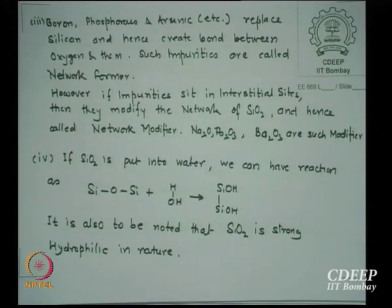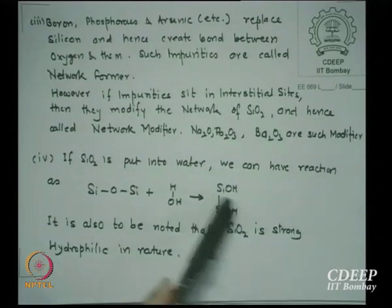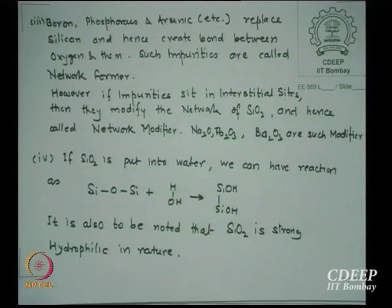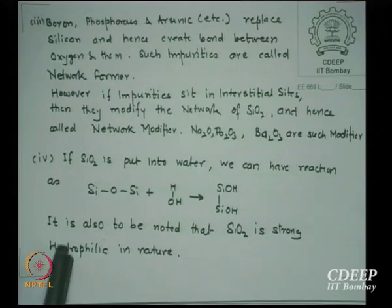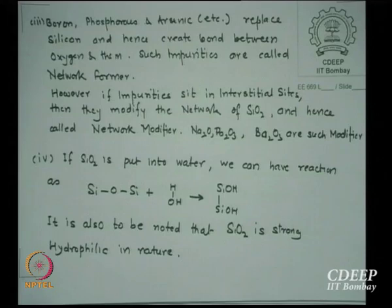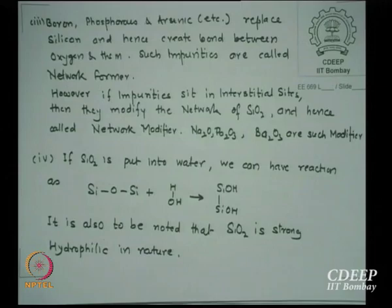If SiO2 is put into water, the Si-O-Si bond reacts with H2O to form Si-OH bonds — silicon hydroxide. This is very important and is the key reason why wet oxides can be grown. One more interesting feature of SiO2 is that it is strongly hydrophilic — water attracts to the SiO2 surface and creates hydroxide bonds. One test: if you dip a wafer into water and water sticks, there is a SiO2 layer; if water does not stick, it is a silicon surface.